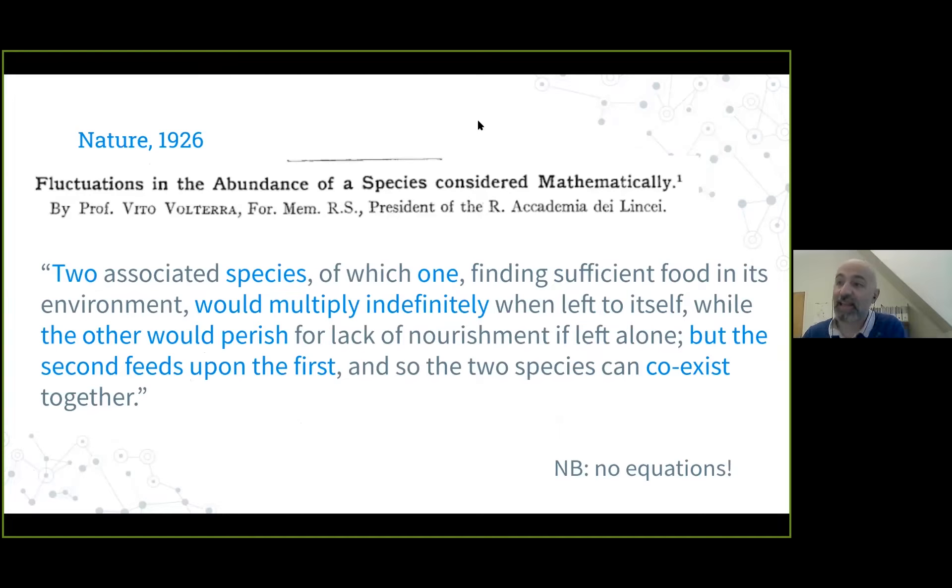Now skip six years and you find this paper in Nature, Fluctuations in the Abundance of a Species Considered Mathematically, communicated by Vito Volterra, a famous Italian mathematician. Importantly, this paper is two pages with no equations, just a graph exactly like the one I just showed you. All the equations are in a separate paper in Italian, which constitutes what we would call today the supplementary information.